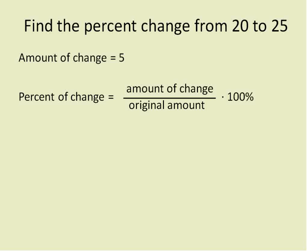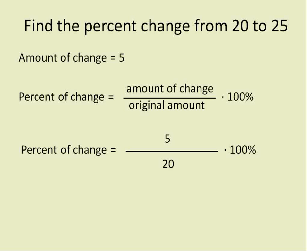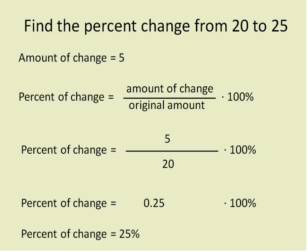Now we're going to use the percent of change equation. Now that we have the amount of change and the original amount, we substitute those values in. The percent of change equals the amount of change, which is 5, divided by the original amount, which was 20, times 100. 5 divided by 20 equals 0.25, and multiplying times 100 gives us 25. So it increased by 25%.